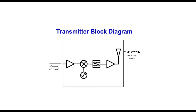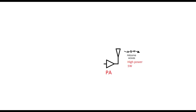In a transmitter system we have different blocks: a mixer, local oscillator, filter, and antenna. The PA is the last block, connected directly to the antenna. At the input of the power amplifier the signal has low power; the PA amplifies it to a higher power level before it is sent to the antenna. For example, GSM can have around one watt output power, while Bluetooth may have around 0.1 watts.